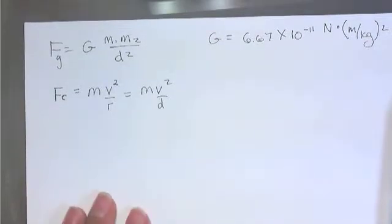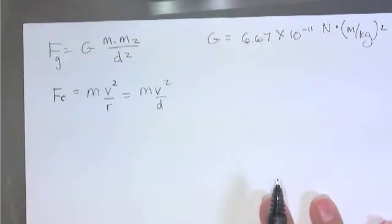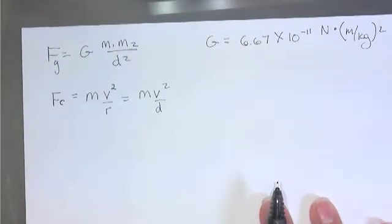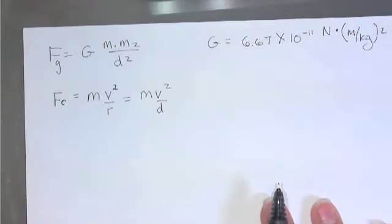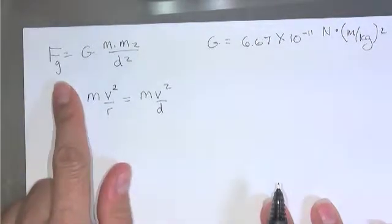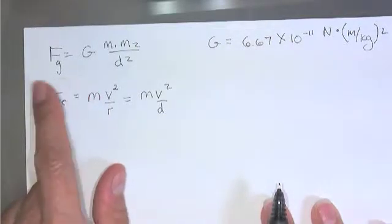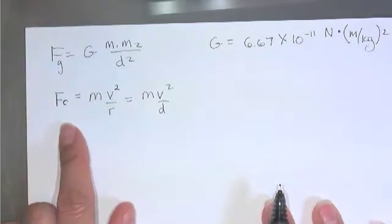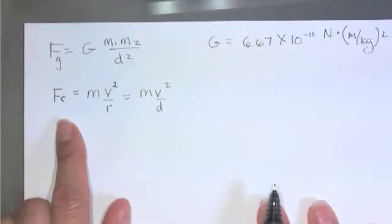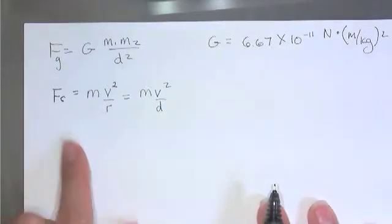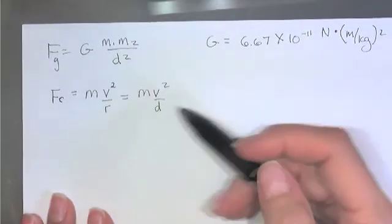So what we're going to do is use these two equations and set them equal to each other, because basically your object will stay in orbit when the force due to the gravitational attraction between your satellite and your planet, we'll say Earth, is equal to the centripetal force. So you're basically balancing these two forces.